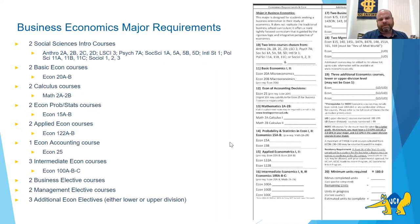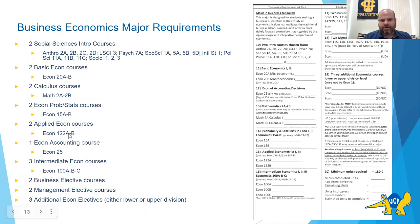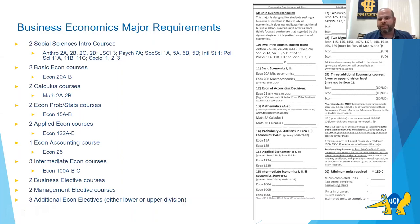Business economics is similar to economics but has some key differences. It includes one accounting course — Econ 25. It also requires both Econ 122A and 122B in applied econometrics. There are two business economics electives and two management economics elective courses required, where we specify which courses qualify. Additionally, there are three additional general economics elective courses beyond the major-specific ones.